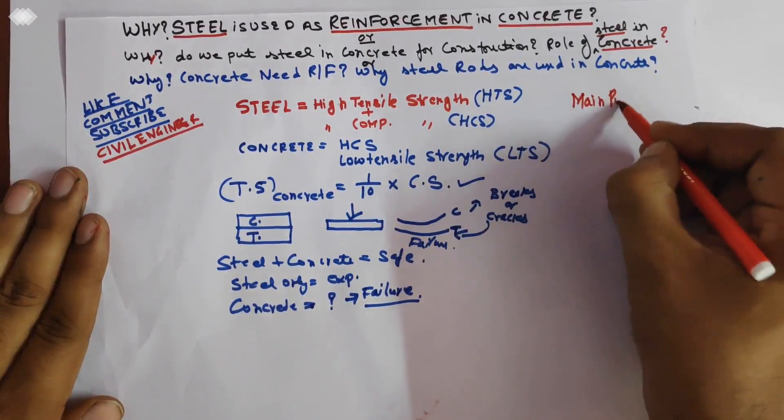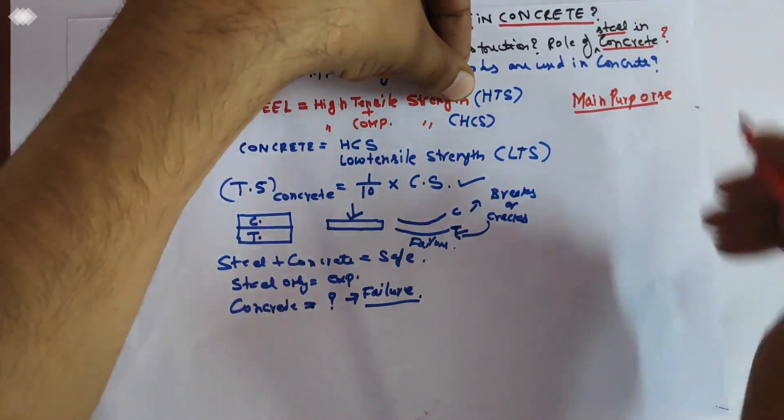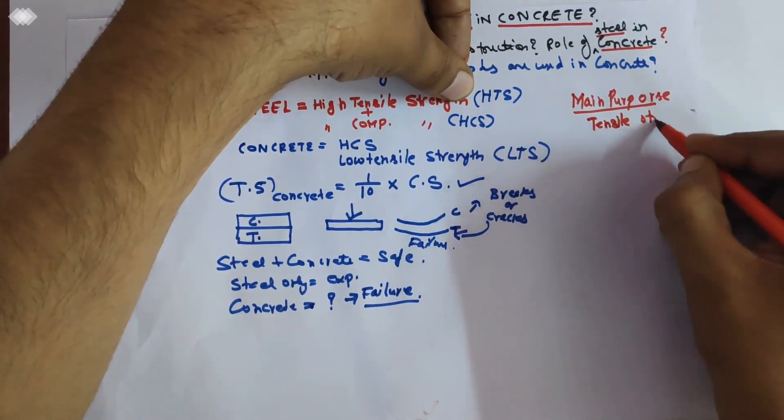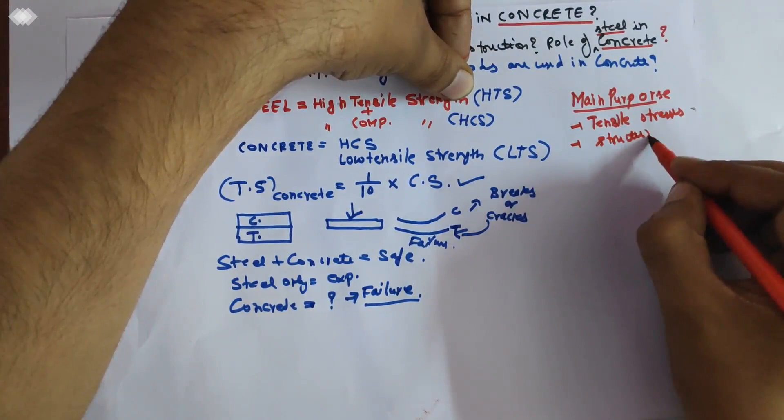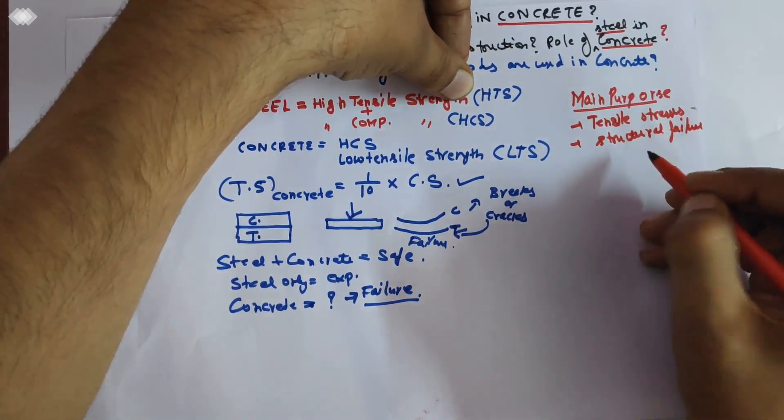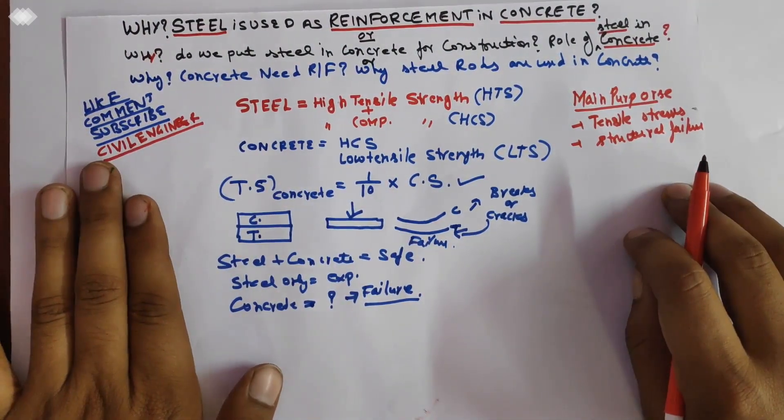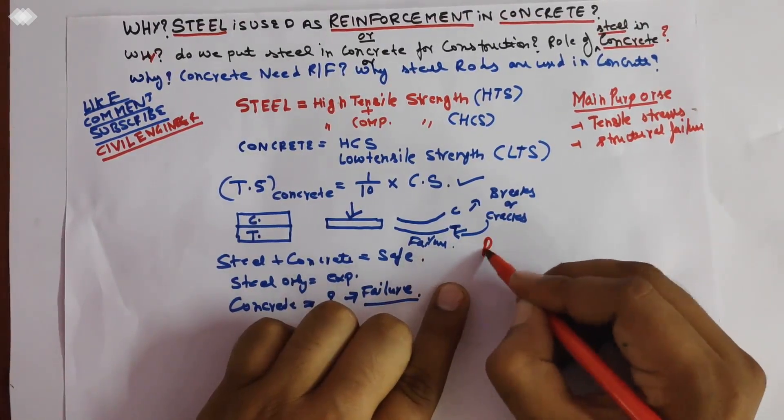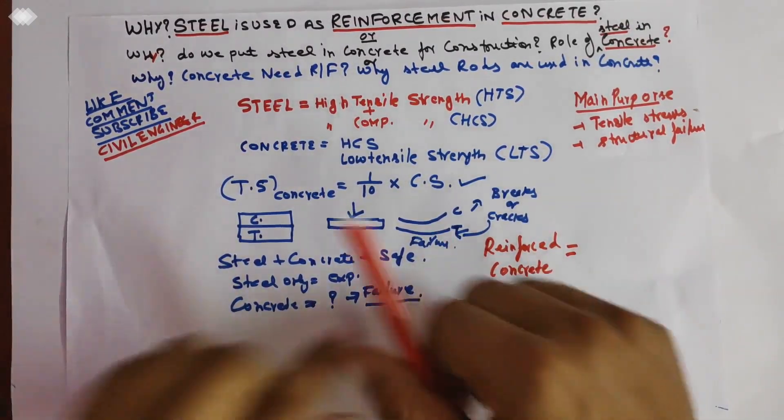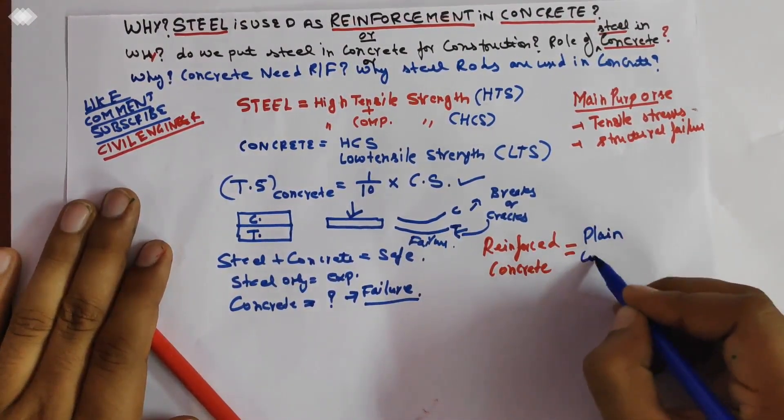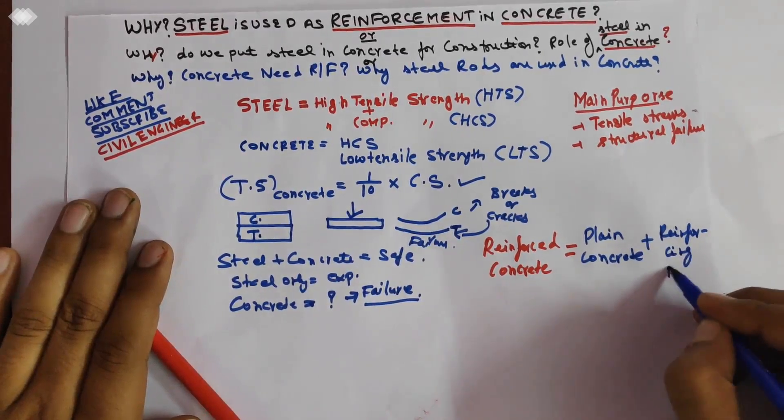So main purpose: if we talk about the main purpose, the main purpose is steel resists tensile stress, the internal stresses, and structural failure. So this is the main purpose of the inclusion of steel, to resist the tensile strength that may cause structural failure or cracking. So we name it as reinforced concrete. What is reinforced concrete? It is a mixture of plain concrete plus reinforcing bars.